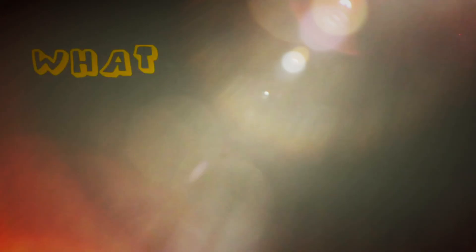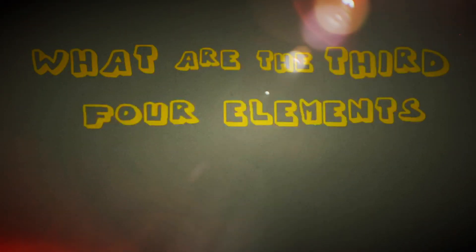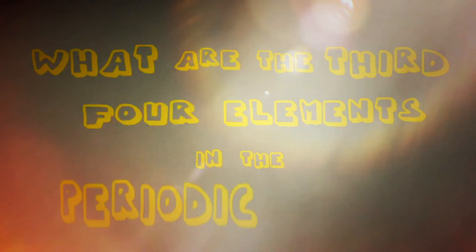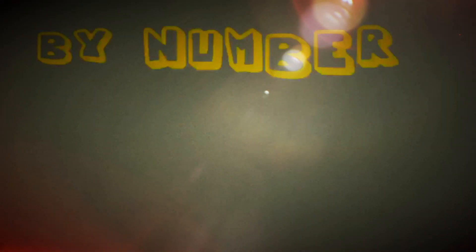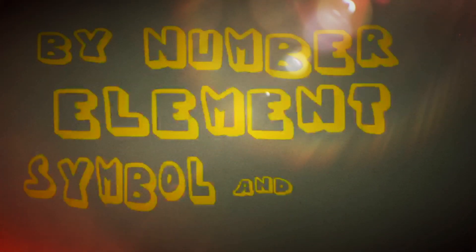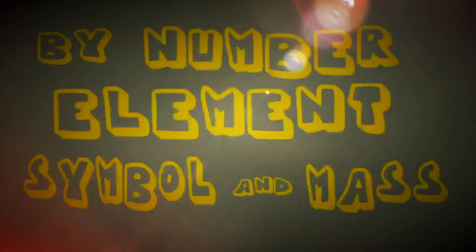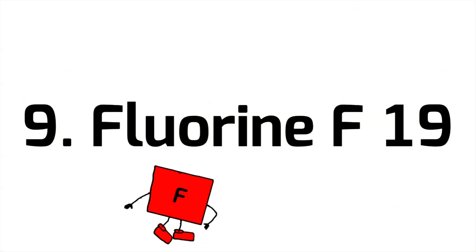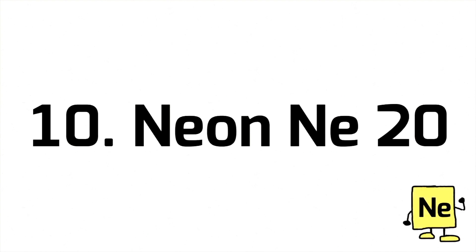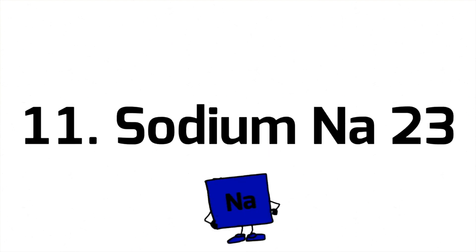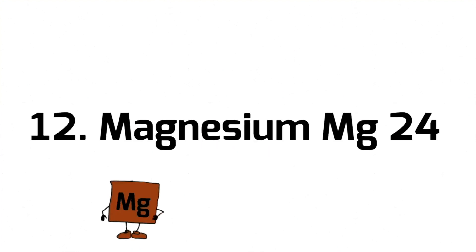What are the third four elements in the periodic table? By number, element, symbol, and mass: Fluorine F19, Neon Ne20, Sodium Na23, Magnesium Mg24.